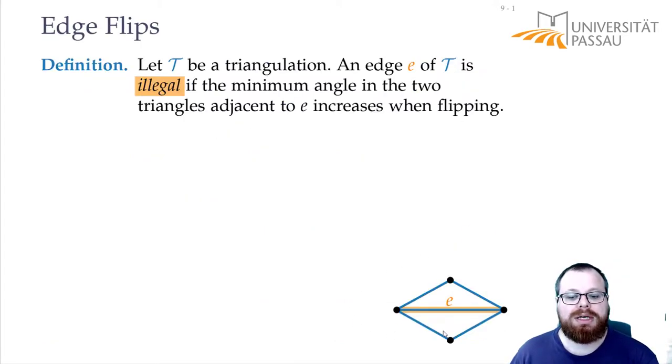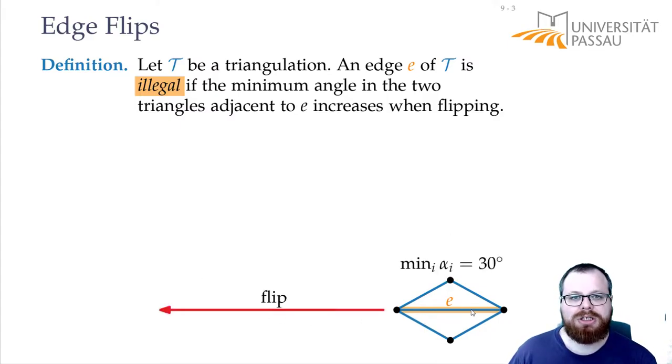If we look at our example from here, then we say that this edge is illegal if we can improve it by doing a flip. A flip is remove this edge and instead add the other one in this quadrilateral that we get from removing the edge. Improving means looking at the angles. Here we had 6 angles, and the minimum of them is 30 degrees.